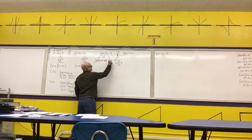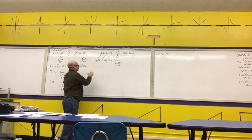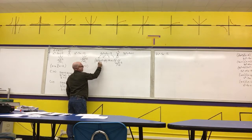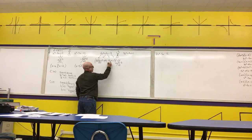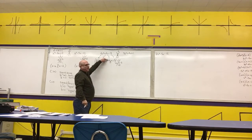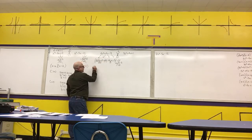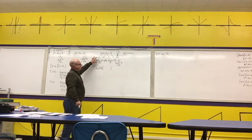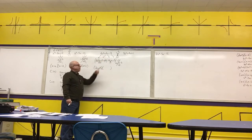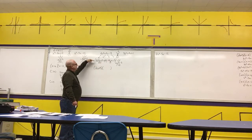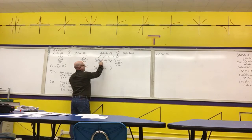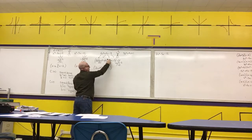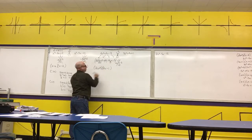Next, find the greatest common factor of each group. For the first set of parentheses, the GCF is 2x, since 2 goes into both 2 and 4, and x goes into x and x squared. For the second set, the GCF is 3. If a term has a negative in front, pull out the negative with the common factor. The first term of the factored form is 2x plus 3. For the second term, divide using the first group: 4x squared divided by 2x is 2x, and negative 2x divided by 2x is minus 1. Check with the second group: 6x divided by 3 is 2x, and negative 3 divided by 3 is negative 1. It checks.